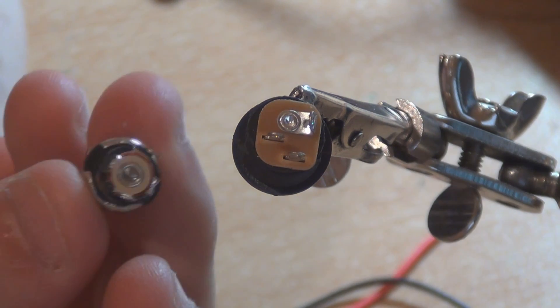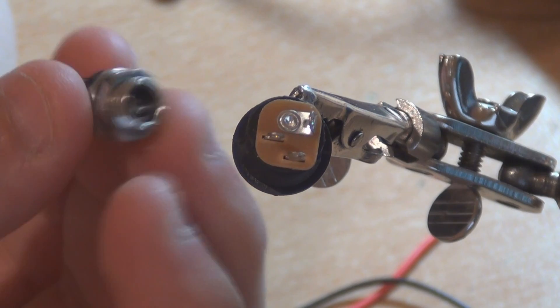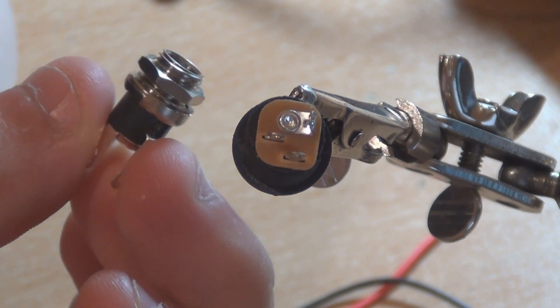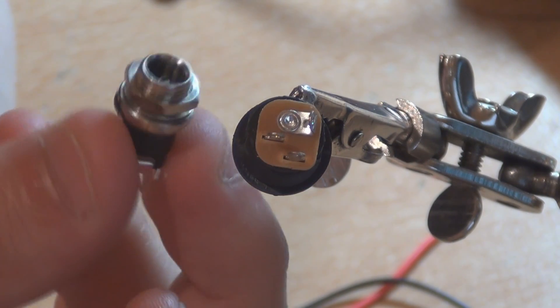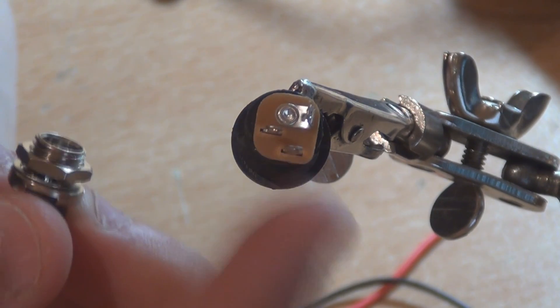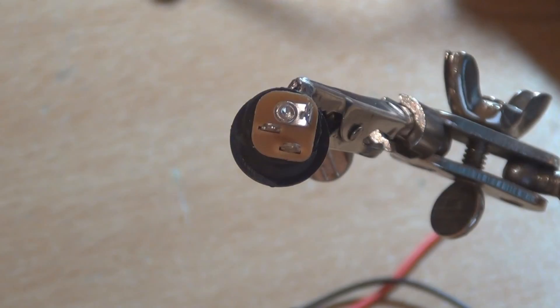You can use either. If you're putting it into a plastic enclosure, you can use either a metal DC jack or a plastic one - it won't make any difference. But if you're using a metal enclosure, you should probably stick with the plastic DC jack.